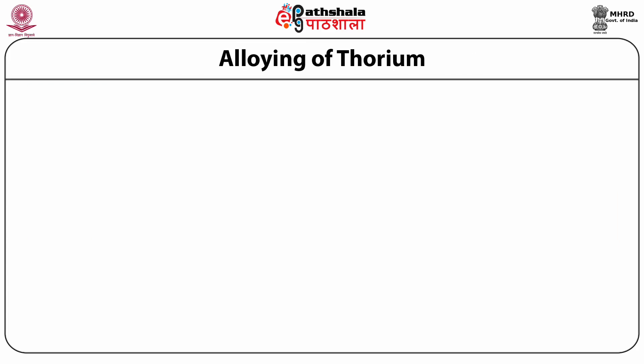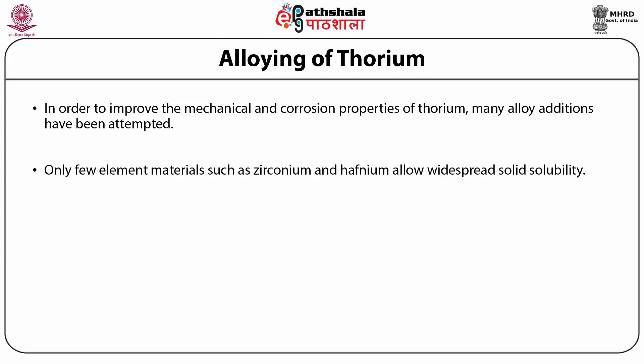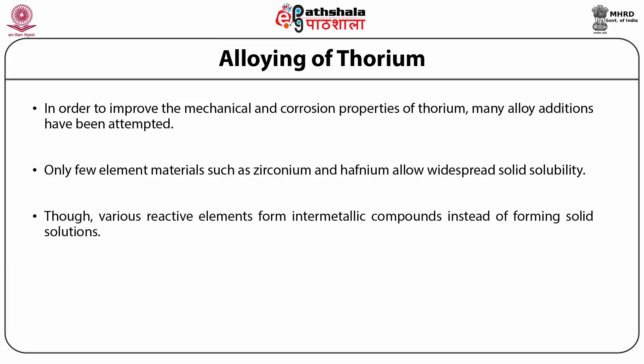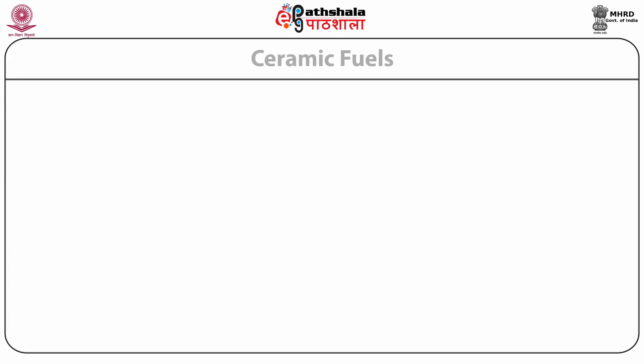Lastly, let us discuss the alloying of thorium. In order to improve the mechanical and corrosion properties of thorium, many alloying additions have been attempted. Only a few elements such as zirconium and hafnium allow widespread solid solubility, while various reactive elements form intermetallic compounds instead. Inclusion of uranium and indium into thorium enhances its mechanical strength, whereas zirconium, titanium and niobium increase corrosion resistance.